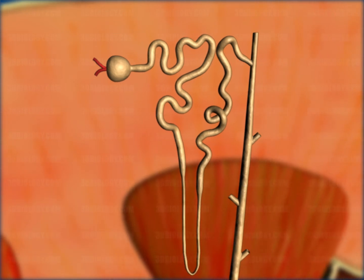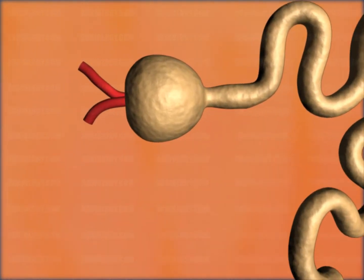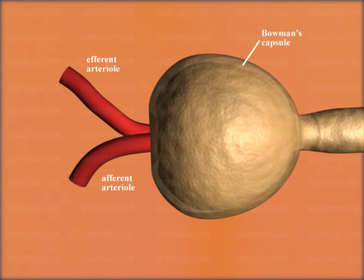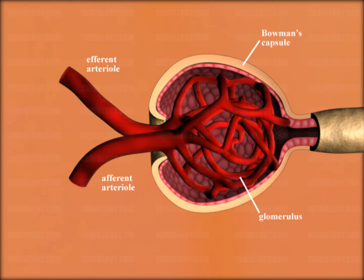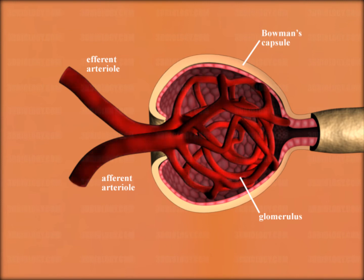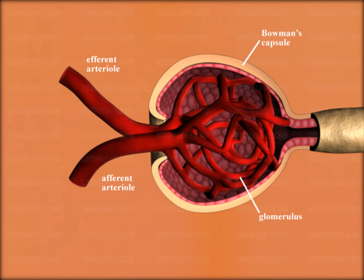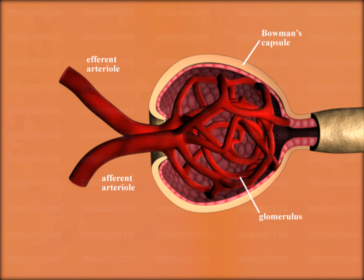An afferent vessel brings blood into the glomerulus, and an efferent vessel takes blood out of the glomerulus. Glomerulus comes from the Latin glomerus, meaning ball of yarn. The glomerulus is the ball of capillaries between the afferent and efferent vessels, and this ball increases the surface area for filtration into Bowman's capsule.